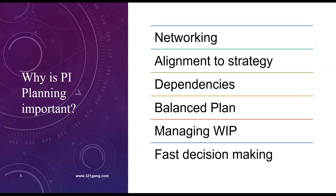Before I get into what Jira Align provides for PI planning, let's talk about PI planning itself. What are the benefits of doing PI planning in the scaled agile context? PI planning breaks silos and encourages networking — you foster cross-team and cross-program collaboration. It aligns product development to desired business outcomes, and you record dependencies. The resulting plan is much more balanced, where business owners can guide teams to prioritize work that results in the desired business outcome.